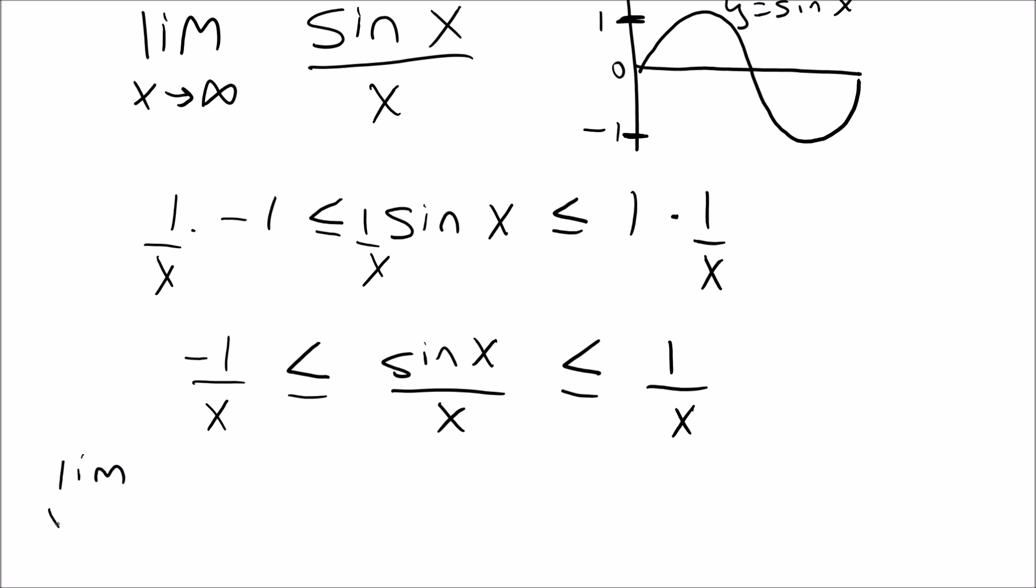All right, now I want to do the limit as x approaches infinity, so I'm simply gonna do limit as x approaches infinity of negative one over x is less than or equal to the limit as x approaches infinity of sine x over x, which is less than or equal to the limit as x approaches infinity of one over x.